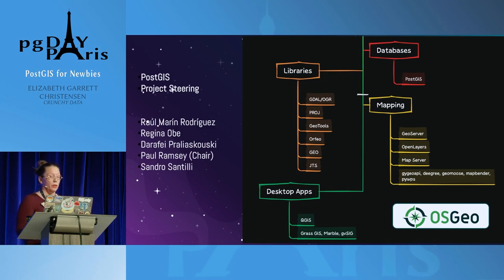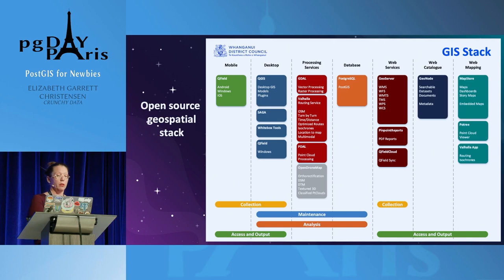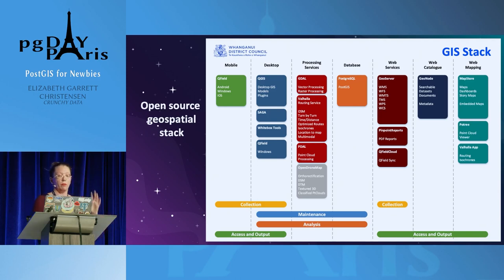I also threw up the core contributor team for PostGIS — if you see these people around at events, they're a great wealth of information. This is a fun little map that the government of New Zealand put out about their open source GIS stack, and you can see that the open source GIS stack has PostGIS in the middle. There are mobile tools to enter data in the field, desktop tools for working with maps and data, processing services, and things that let you turn those into web-based maps and application data.